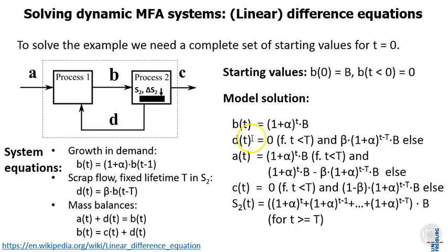In this case we can step-by-step manually compute the model solution. The first thing we do is we calculate the inflow b by applying its definition equation recursively so that we can then identify that (1+alpha) to the power of t times B is the actual inflow in year t. This is the growth factor of every year applied subsequently and then finally to the B inflow.